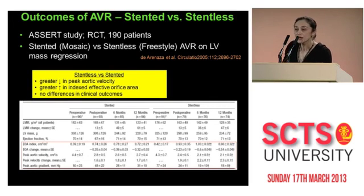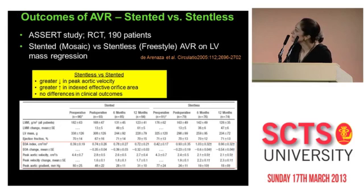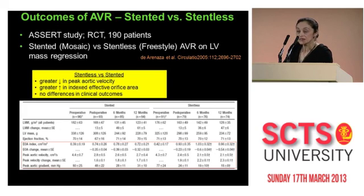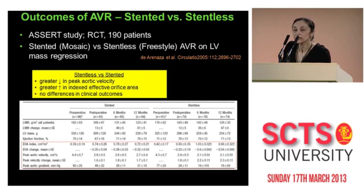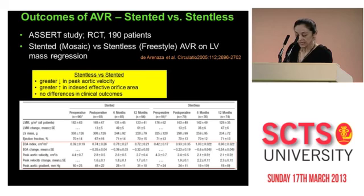In the randomized trial of stented versus stentless valve by Professor Pepper and colleagues, published in 2005, they showed that there was a greater decrease in peak aortic velocity with a stentless valve. The indexed effective orifice area also improved. However, again, this did not translate into clinical outcome. We are keenly awaiting their five- or six-year results to be published this year.